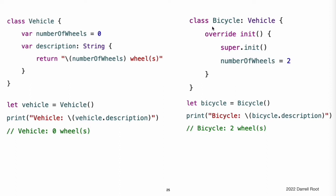This next example defines a subclass of Vehicle called Bicycle. The Bicycle subclass defines a custom designated initializer, init. This designated initializer matches a designated initializer from the superclass of Bicycle, and so the Bicycle version of this initializer is marked with the override modifier. The init initializer for Bicycle starts by calling super.init, which calls the default initializer for the Vehicle superclass. This ensures that the numberOfWheels inherited property is initialized by Vehicle before Bicycle has the opportunity to modify the property. After calling super.init, the original value of numberOfWheels is replaced with a new value of 2.